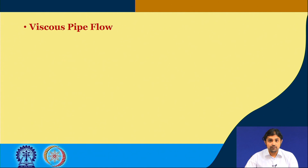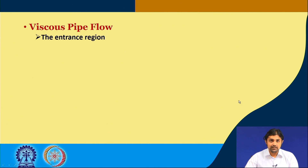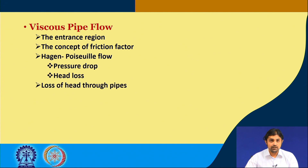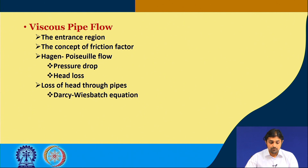The following week will deal with viscous pipe flow, because the flow in pipes is viscous. We will see the entrance region, we will study the concept of friction factor, Hagen-Poiseuille flow, and we will see the pressure drop and the head loss. We will also specifically see how to calculate the loss of head through pipes using the Darcy-Weisbach equation, and we will see what are the major and minor losses.